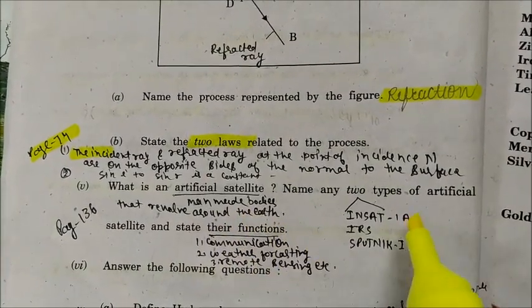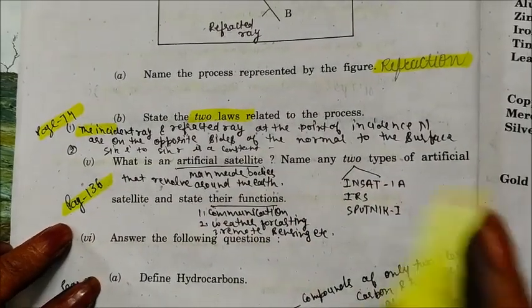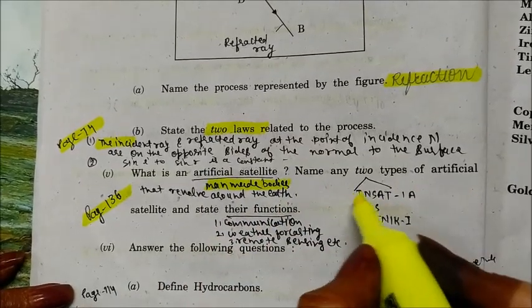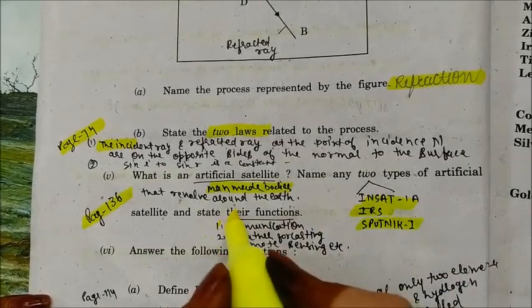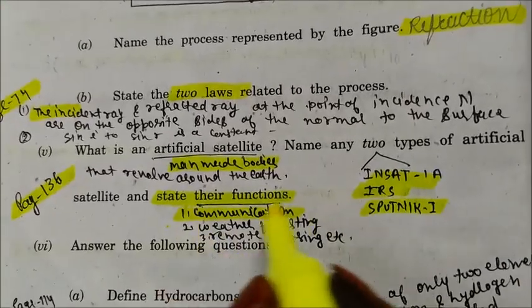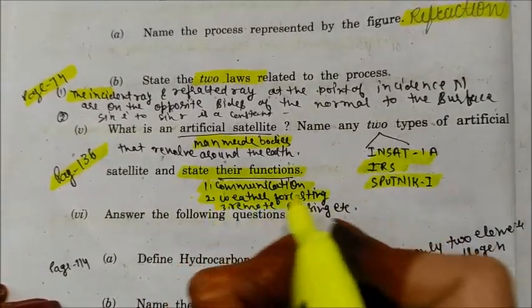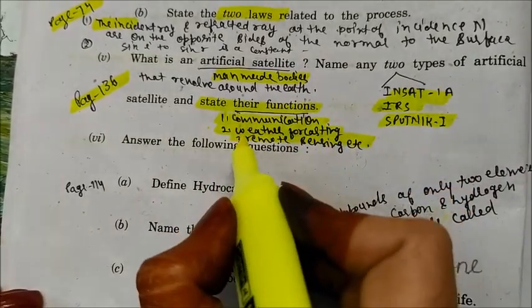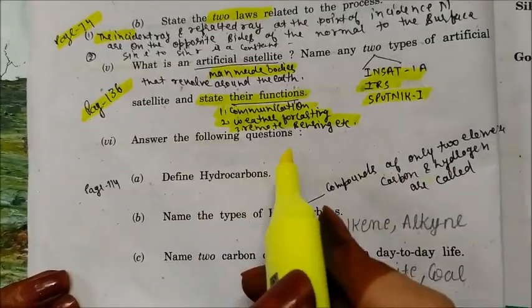What is an artificial satellite? Artificial satellites are man-made bodies. Name any two types: INSAT 1A and IRS. State their functions: INSAT 1A is used for communication, and IRS is used for remote sensing and weather forecasting.